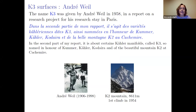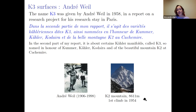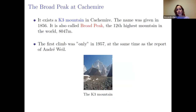Let me recall the history of the name K3, which is a very nice story. The name K3 was given by Weil in 1958 in a report on a research stay in Paris. The name comes from the mountain K2 and from the three great mathematicians Kummer, Kähler, and Kodaira, who made a lot of contributions to the study of surfaces, and in particular K3 surfaces. There is also a K3 mountain in Kashmir called Broad Peak.